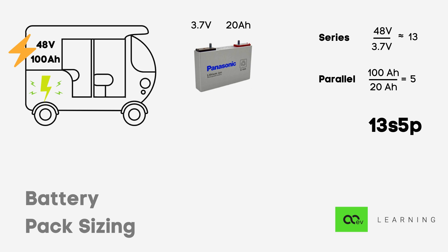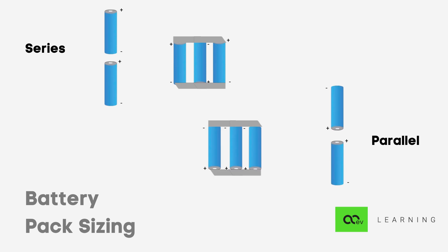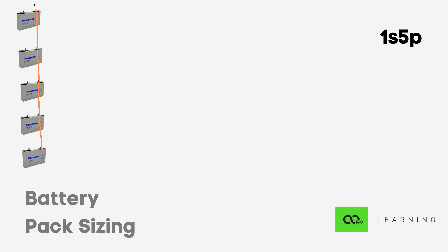Now how are these cells physically connected in the battery pack? As a prerequisite: for series connection, we join the positive of the first cell to the negative of the second, and so on — voltage increases. For parallel connection, we join positives together — capacity increases. For our 13S5P case, we first connect five cells in parallel in the first row, joining all positives together. This becomes 1S5P — output is 3.7 volt and 100 Ah.